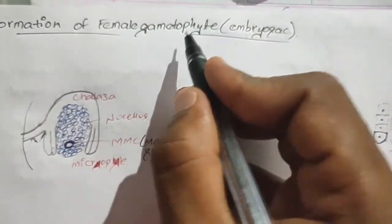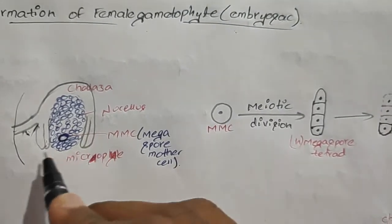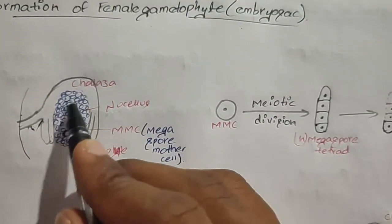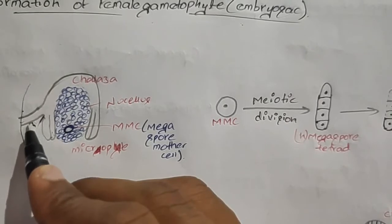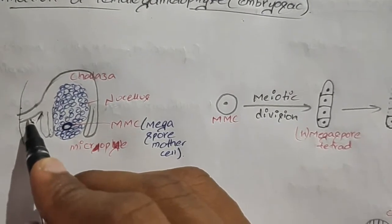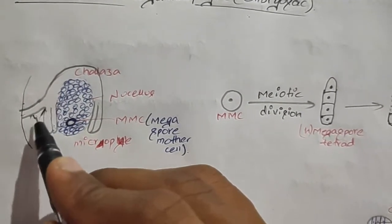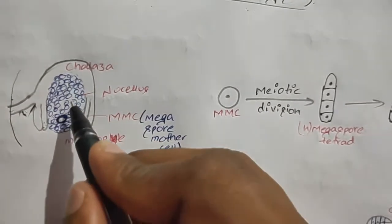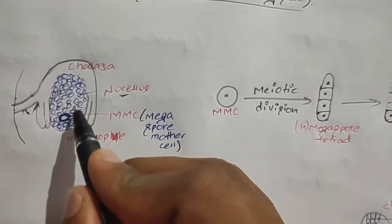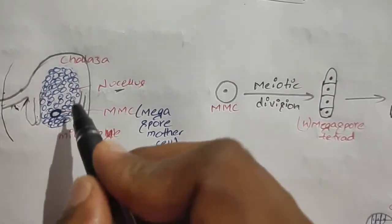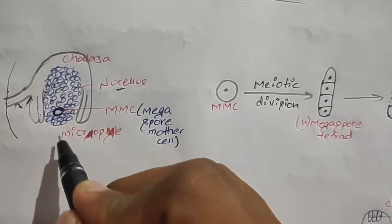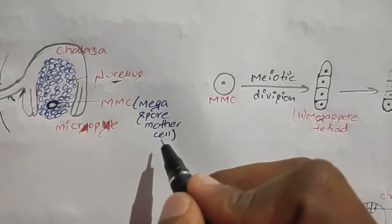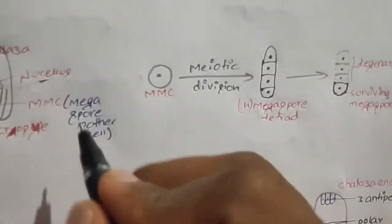Formation of the female gametophyte, that is the embryo sac. Inside the ovary the ovule is present, and the place where the funicle is attached to the ovule is known as the hilum. In the ovule, many cells are present known as the nucellus. One of the cells of the nucellus, which is present towards the micropyle end, will become bigger and is known as the megaspore mother cell.